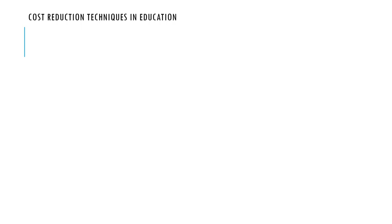Now, what are the cost reduction techniques we can use in education? First, the average class size. If you want to reduce costs, instead of making your class size 15 per class, you make it up to 40. If you make it 15, it would be easier for the teacher to reach every student. By the time you make it up to 40, it becomes a little more difficult. However, while trying to reduce costs, also consider the quality of education that will come out of your teaching and learning.